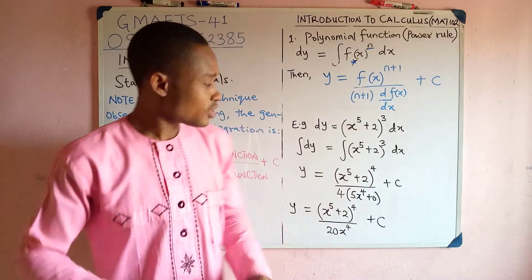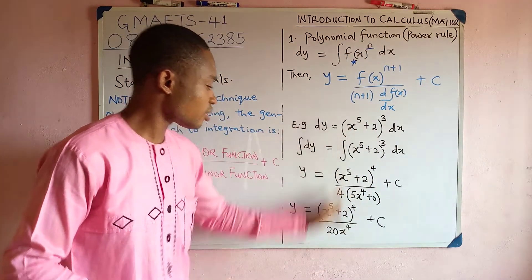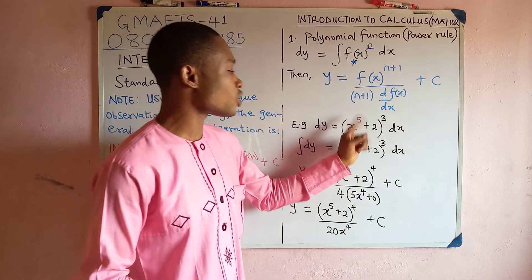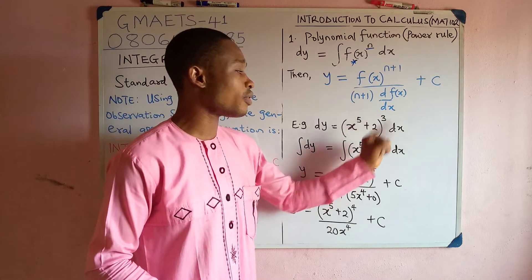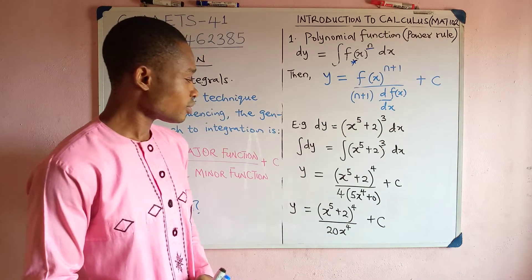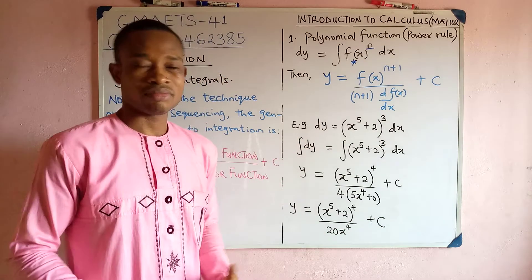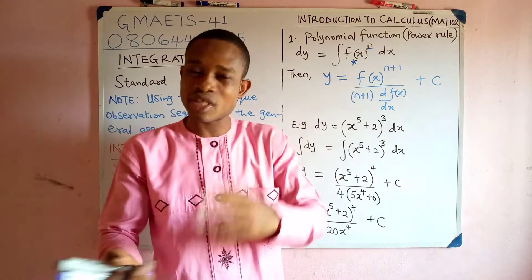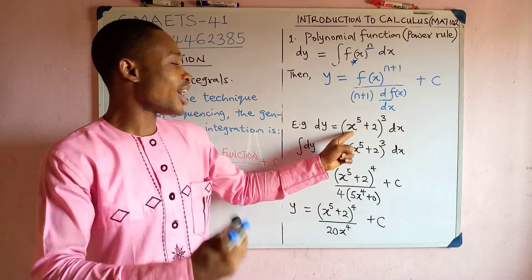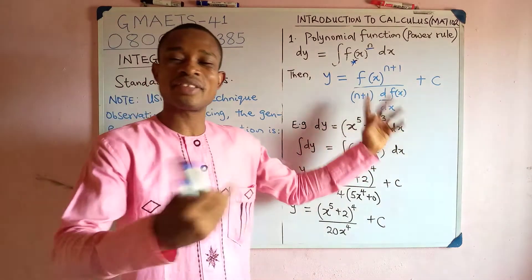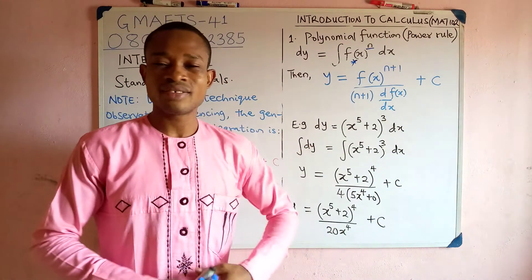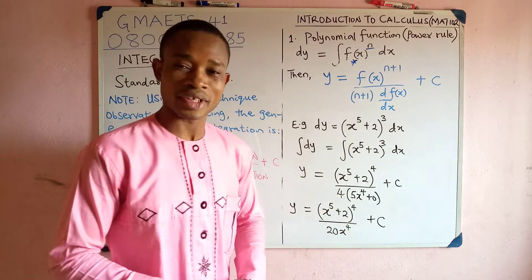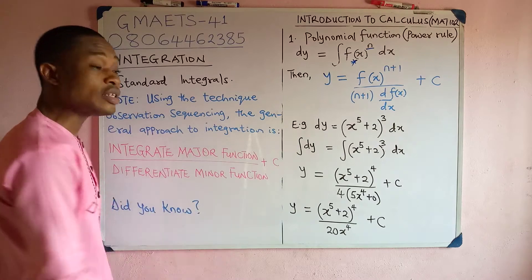Now, let's look at this example on the board. You are given dy equal to the open bracket x raised to power 5 plus 2, close bracket, raised to power 3, dx. Some would work through the reverse of the chain rule, letting u equal x raised to power 5 plus 2, then everything raised to power 3 — but that's not necessary. We can work around that without reversing the chain rule.